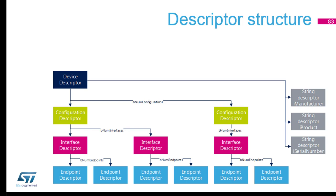On top of the structure, we've got a device descriptor — I will say it mainly describes everything and will point to other structures. The device descriptor will point to some string descriptors: information such as the manufacturer, the product, and the serial number. It's just the information you can see in Windows when you connect something — you can see it's a product from this company.